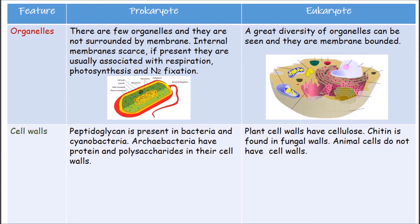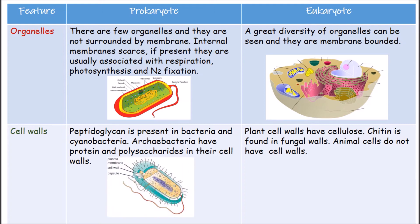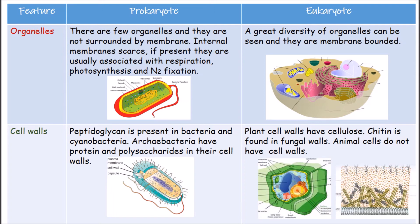A great diversity of organelles can be seen in eukaryotic cells, and they are membrane-bounded. The nucleus, mitochondria, and chloroplasts are bounded by two membranes, while lysosomes and vacuoles are bounded by a single membrane. Regarding cell walls, peptidoglycan is present in bacteria and cyanobacteria; archaea have proteins and polysaccharides in their cell walls. Plant cell walls contain cellulose, chitin is found in fungal cells, and eukaryotic cell walls are never composed of peptidoglycan.